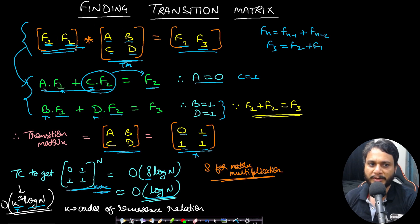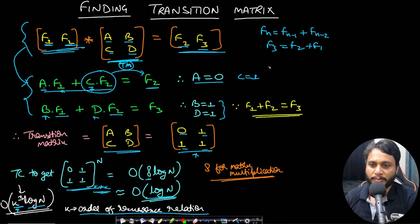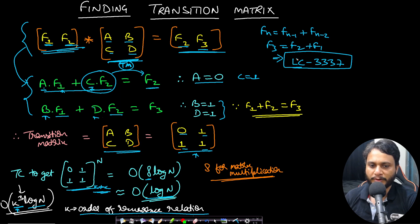You can multiply with initial [F1, F2] to get the Nth Fibonacci number in log N time. To apply this technique, you can solve LeetCode problem 3337, where matrix exponentiation is directly applied. If you still have any doubts, feel free to comment below and I'll try to help you as soon as possible. See you guys in the next video.